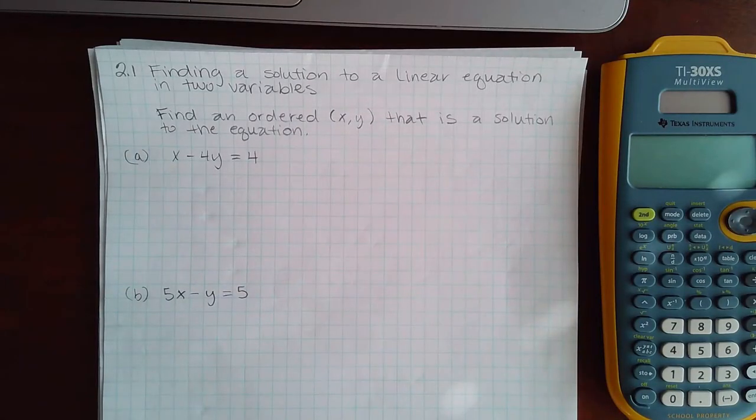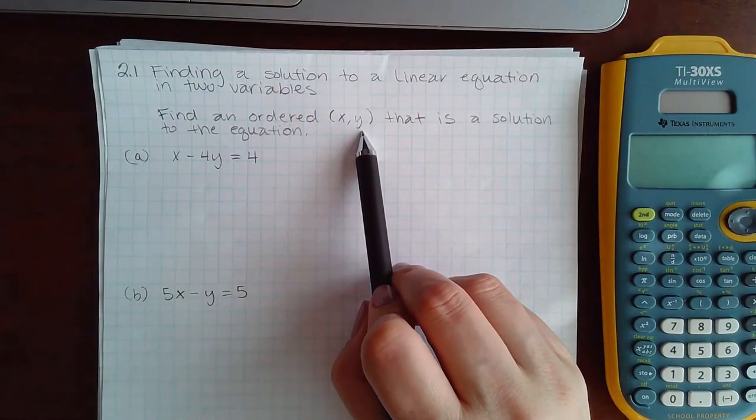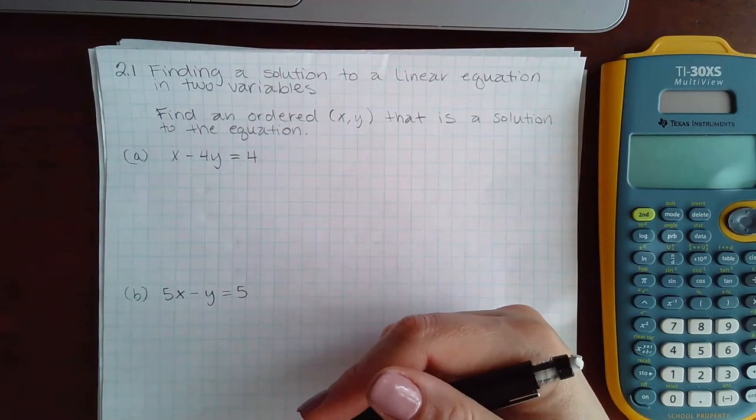Here we're doing 2.1, finding a solution to a linear equation in two variables. This problem says find an ordered pair (x, y) that is a solution to the equation. There are various answers you could essentially plug in. You could pick either an x coordinate or a y coordinate, plug the one you picked in, and solve for the other one.